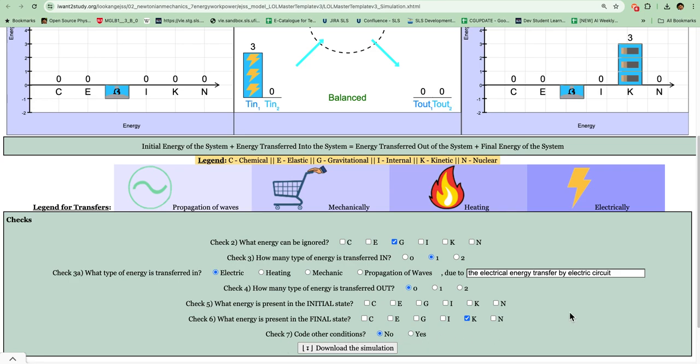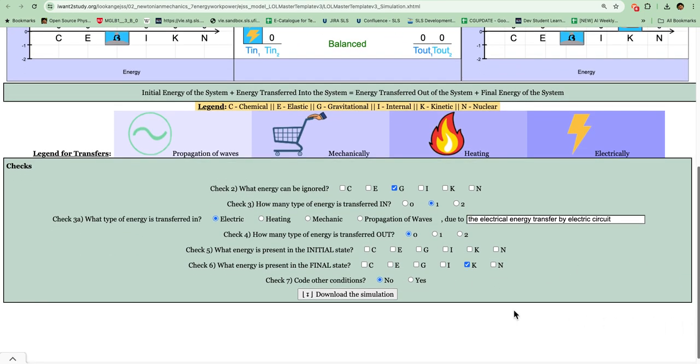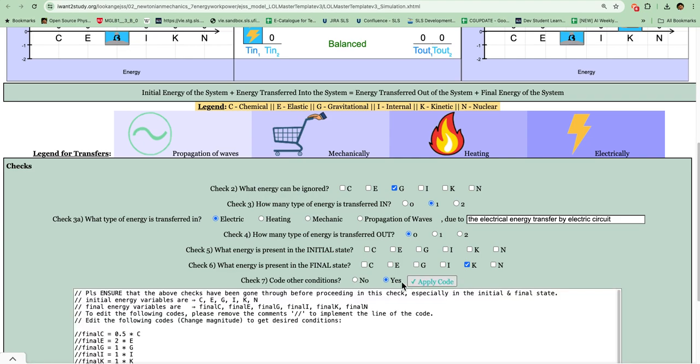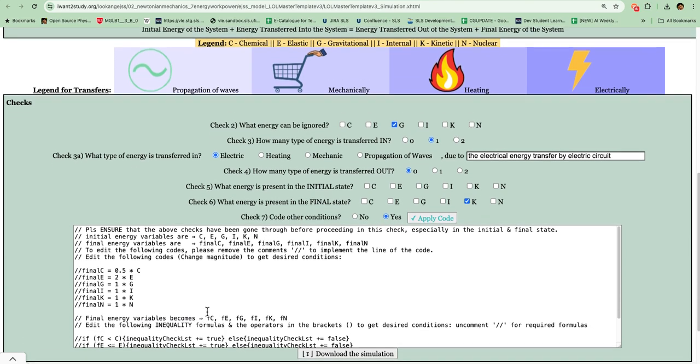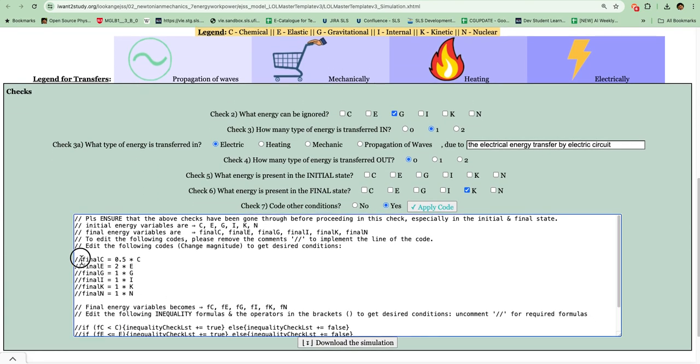Check number seven is where you will select no, but in case you have a more difficult condition or scenario, click yes and we already pre-write for you some simpler codes. For example, how to understand this line: if I want the final chemical energy to be half of that of the initial, then I must select this and click apply.